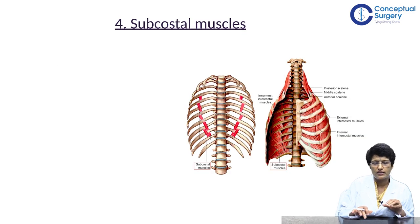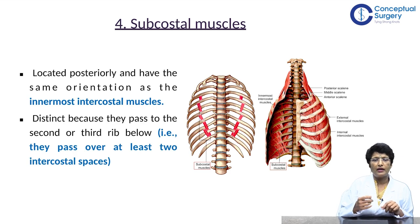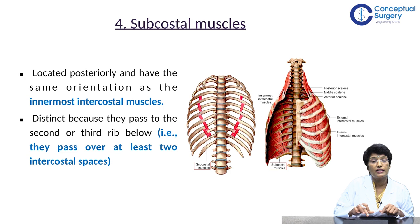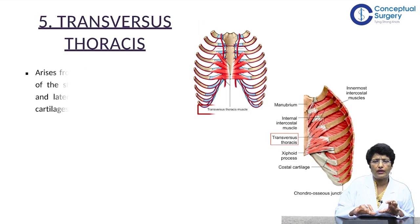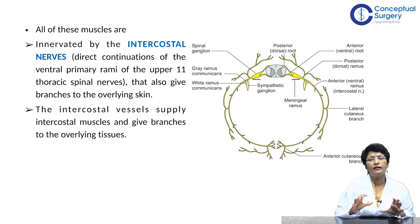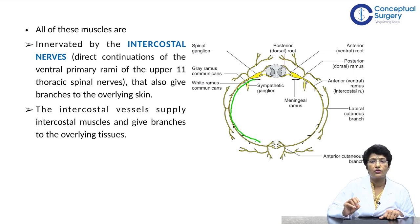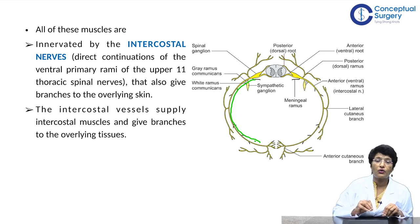The subcostal muscle is interesting in that it tends to skip ribs, passing to the second or third rib directly below. These have the same orientation as the innermost intercostal muscles. Then there is transversus thoracis — this completes the skeletal framework of the chest wall. All of these muscles are innervated by the intercostal nerves, and the intercostal vessels supply not just the intercostal muscles but also the breast.